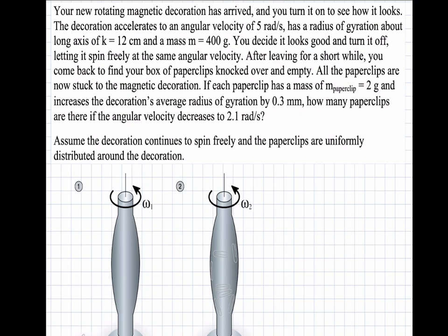In this problem, we have a rotating decoration that initially rotates with an angular velocity of five radians per second and has a given radius of gyration and mass. But after a while, we come back to it and paper clips are magnetically attached to it.